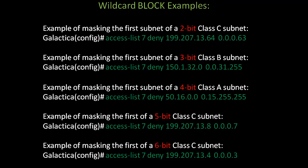The next example is masking the first subnet of a 5-bit class C subnet. The commands are access-list 7, deny, 199.207.13. Notice the mask part is 0.0.0, so we match those three octets — 199, 207, and 13 — exactly. In the last octet, we're using a block of 8. We subtract 1, so the mask value is 7. That takes us up to the next network, which would begin on a multiple of 8 at 16.